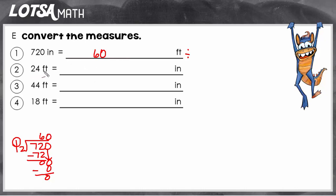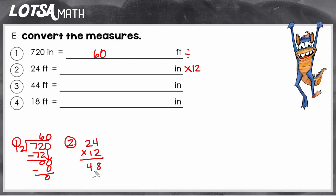Number two: 24 feet equals how many inches. So we're going from larger to smaller, horse to fly — horse to fly, multiply. We're going to multiply by 12 because there are 12 inches in one foot. So for number two, we have to do 24 times 12, and we get that there are 288 inches in 24 feet.